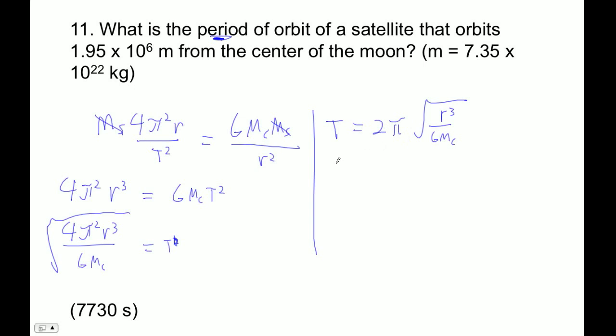Okay, so what are we doing here? We're just going to plug numbers in. So 2 pi square root of the radius to the third, this guy, 1.95 e to the sixth. That means times 10 to the sixth.